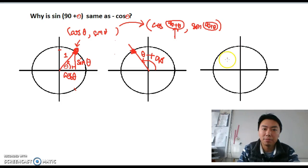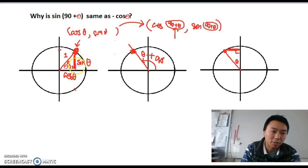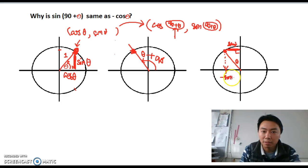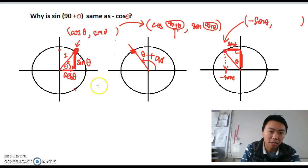Now I'll use a triangle to represent the second point. This triangle has angle θ, and the height of this triangle is the same as the height of the first triangle — so I can call it sin θ. Looking at the horizontal axis, this corresponds to negative sin θ. So the x-coordinate of this point is negative sin θ. The base of this triangle is the same as the base of the first triangle, which is cos θ, giving the y-coordinate as cos θ.